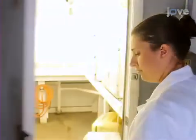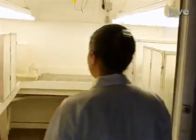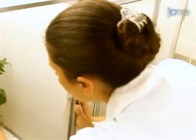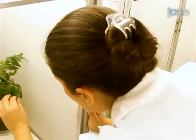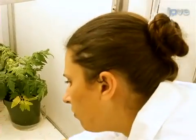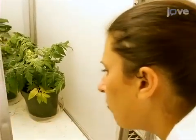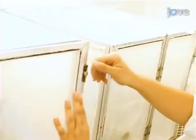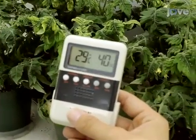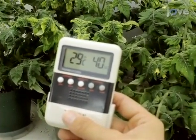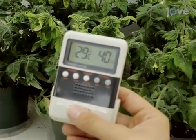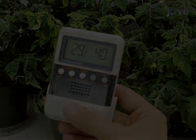Whitefly colonies should be maintained in a clean and controlled growth room. Control of relative humidity, temperature, photoperiod, and light intensity are essential for a colony that develops from egg to adult in 18 days. Use the following settings: the temperature should be set between 26 and 30 degrees Celsius, and the relative humidity should ideally be between 30 and 50 percent.